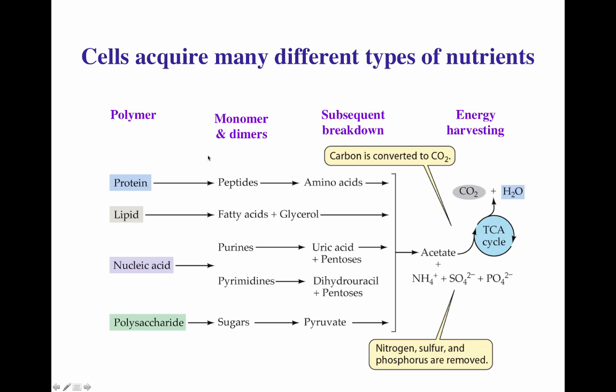Here is an image showing the general pathway that nutrients take in microbes. The first column covers polymers. The second column shows monomers and dimers derived from those polymers, and then what they are broken down into subsequently, and where those molecules fit in metabolic pathways. For example, a protein is broken into peptides, which are further broken down into amino acids. Eventually, amino acids enter as acetate or pyruvate, which can go into the Krebs cycle.